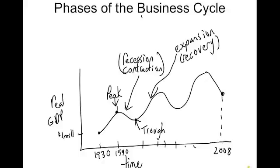The recession will eventually hit a trough, which is the low point, and then start to expand again into recovery. It will then hit another peak. From peak to peak is one full cycle, or you can think of it as trough to trough. A cycle covers all four phases: trough, expansion, peak, and recession.